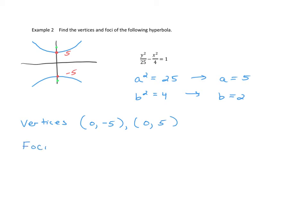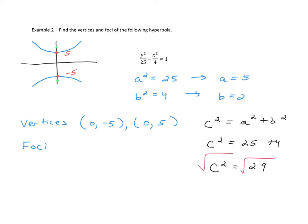For the foci, we use c squared equals a squared plus b squared, which gives c squared equals 25 plus 4 equals 29. Taking the positive square root, c equals the square root of 29. So the two foci are at (0, negative square root of 29) and (0, positive square root of 29).